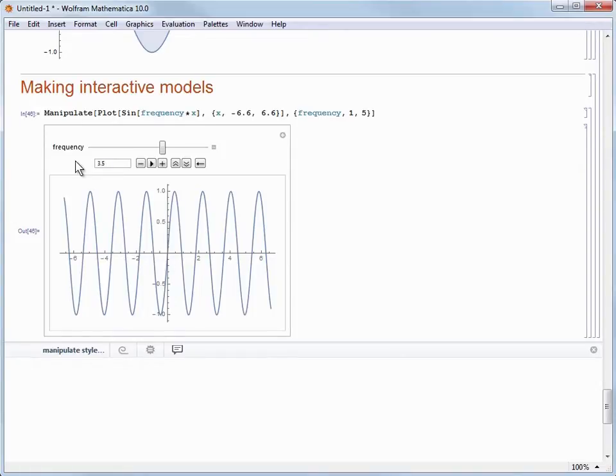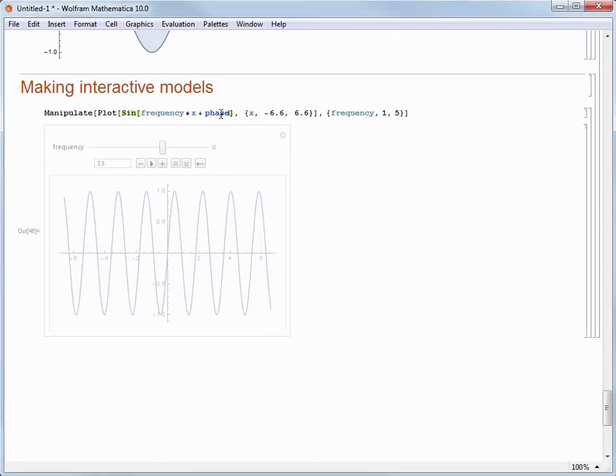Let's make our model a little more interesting by introducing a new parameter. This time, let's add in a symbol called phase and we'll put that to the right of the x inside of the sign command. So we'll end up with frequency times x plus phase. As we type this in, you may notice a couple of things.